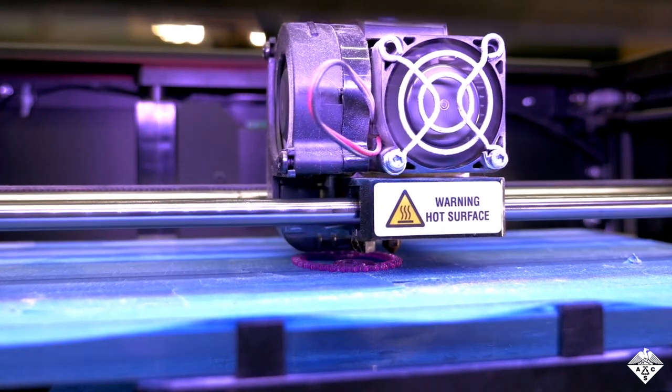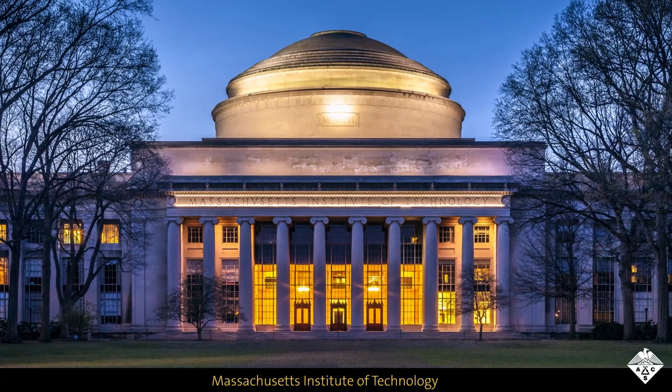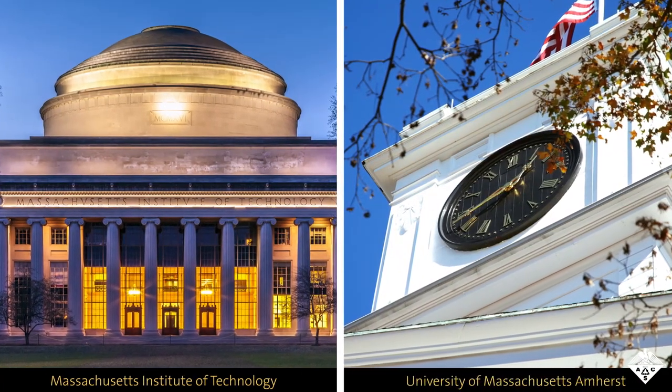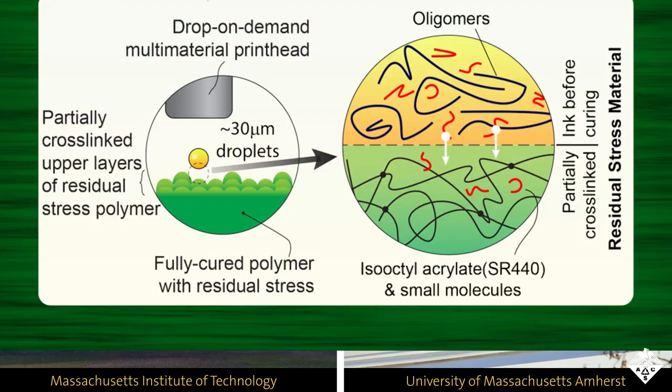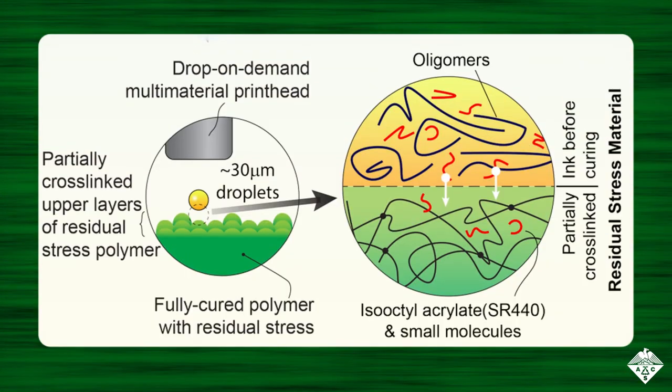To create these devices, scientists at the Massachusetts Institute of Technology and the University of Massachusetts Amherst formulated a new ink containing acrylate monomers and oligomers that can be cured with ultraviolet light.